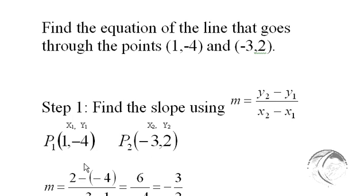We've got y2 minus y1—notice that minus a negative 4, we have to be careful, that's going to be a positive 4 to make 6. On the bottom, it's x2 minus x1, which gives us negative 4. We end up with negative 3/2.